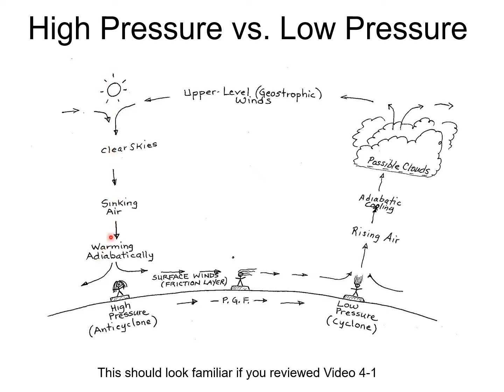Since the air is sinking rather than rising, we get clear skies, which creates high pressure at the surface. That high pressure allows air to diverge outward in all directions, moving across the surface with friction layer winds back towards a low pressure cell where the air will rise. The area of sinking air we call an anticyclone; the area of rising air we call a cyclone.